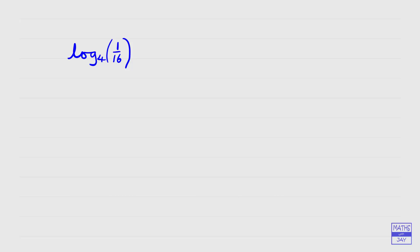Let's have a look at log to base 4 of a sixteenth. We're thinking: 4 to the power of something equals one sixteenth. It's easier to do this in two stages — first think about 4 to the power of something equals 16, which gives us 4 squared. Then one over 4 squared can be written as 4 to the power of negative 2, because taking the reciprocal makes the power negative. So the log to base 4 of one sixteenth is negative 2.